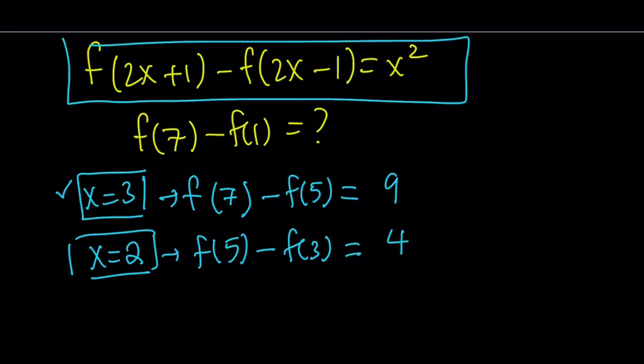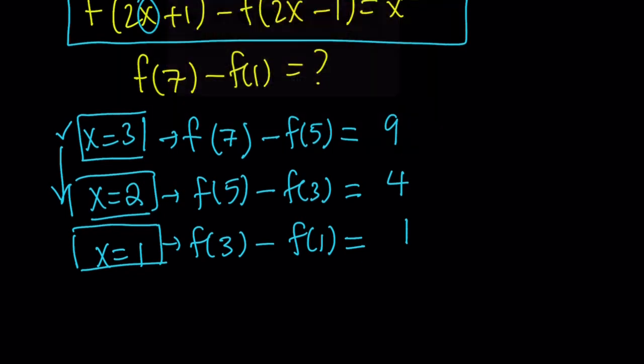But not that awesome because now we get a negative f of 3. We need to get rid of that too. So why not replace x with 1 now? So we're kind of going down here. There is a pattern. And this is going to give us, when you replace x with 1 here, you're going to get f of 3 minus f of 1 equals 1 squared, which is 1. Now, we got the f of 1, so we need to stop because if we don't stop, then we're going to go down to f of negative 1, f of negative 3, so on and so on. You don't want that. So let's go ahead and stop here and evaluate.